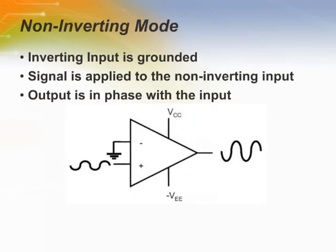In the Non-Inverting Input Mode, the signal is applied to the positive input of the amplifier while the negative input is grounded. The output signal under these conditions is going to be completely in phase with the input signal.